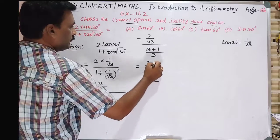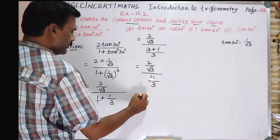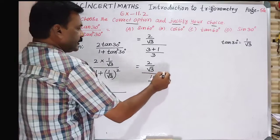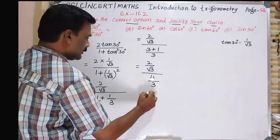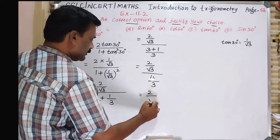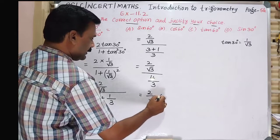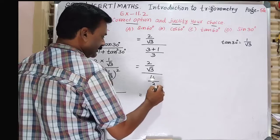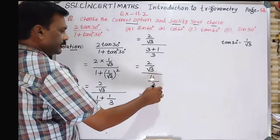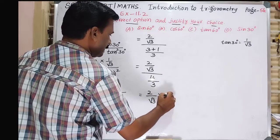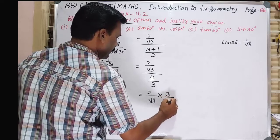4/3 is equal to, division to multiplication, 2/√3 into 3/4. So reverse: denominator goes to numerator, numerator goes to denominator. So 3/4.